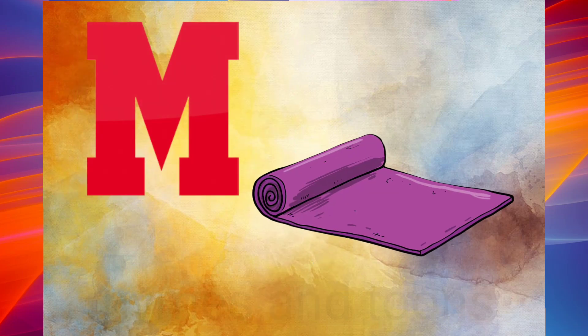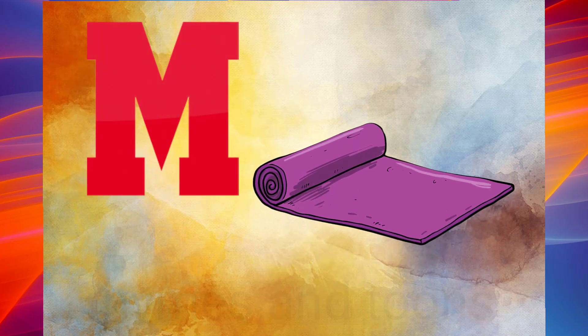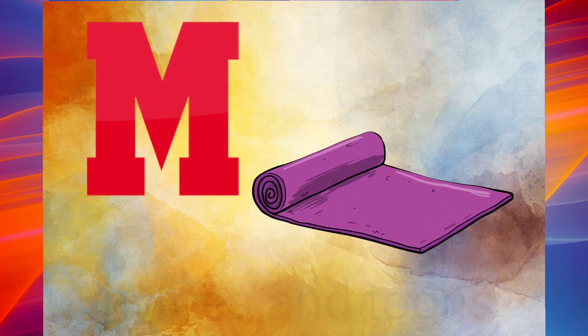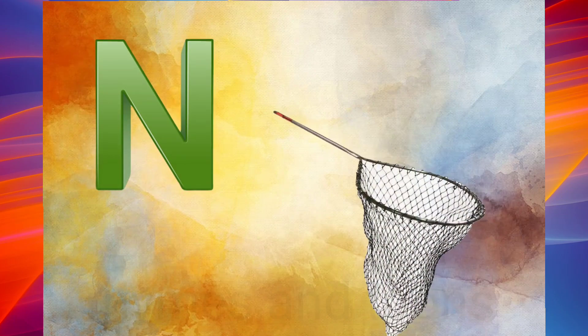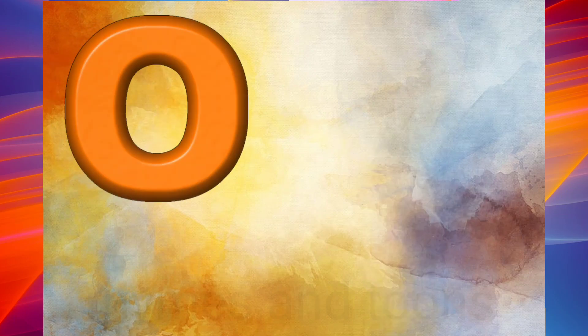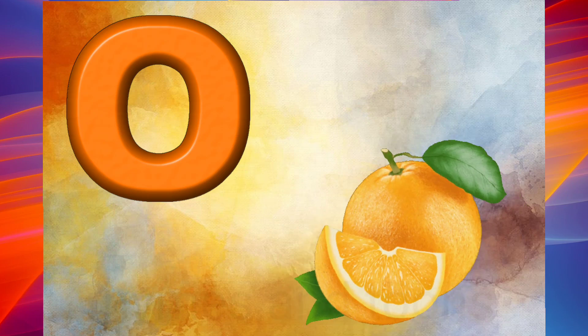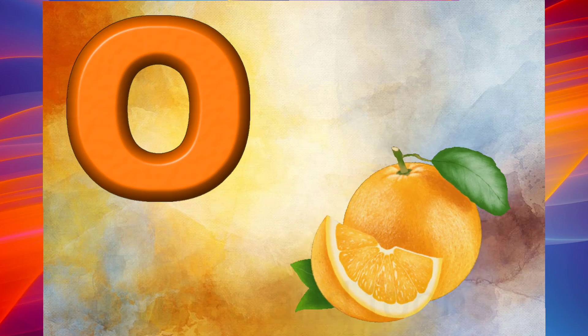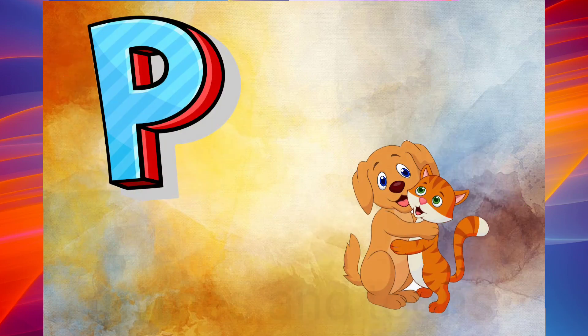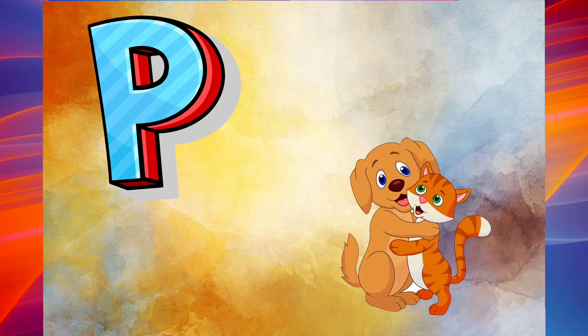M is for mat, m-m-mat. N is for net, n-n-net. O is for orange, o-o-orange. P is for pet, p-p-pet.